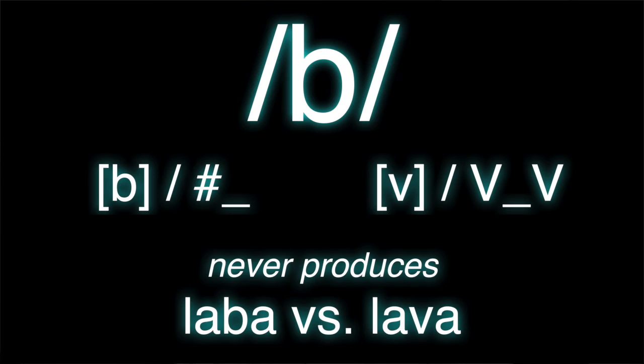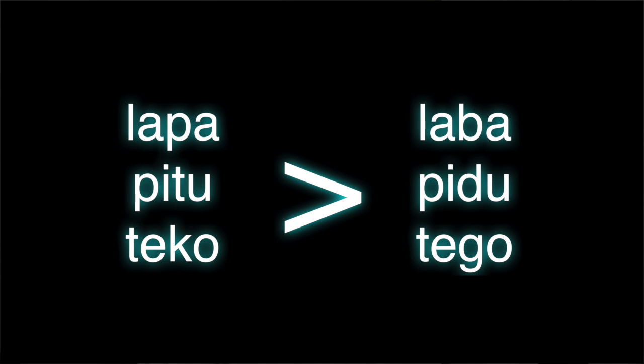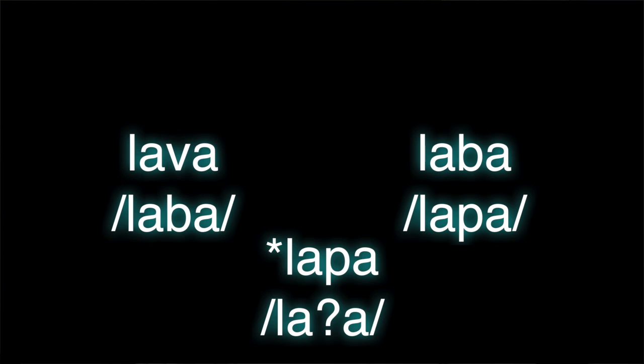You only have the fricatives in between vowels, and you only have the stops at the beginning of words. You might think to fix that by voicing the voiceless consonants in between vowels as well. So you take all your voiceless stops and voice them in between vowels. Now you have, for example, B at the beginning of a word and B in between vowels. But then of course now you don't have the voiceless stops in between vowels. So what do you do?